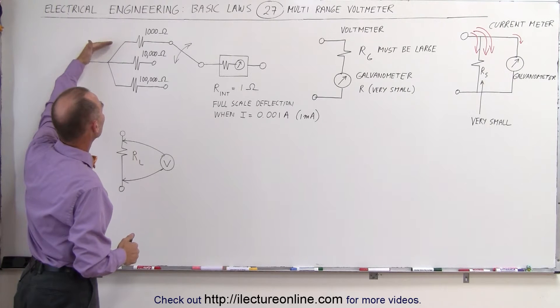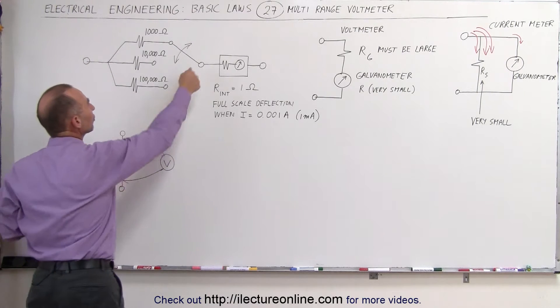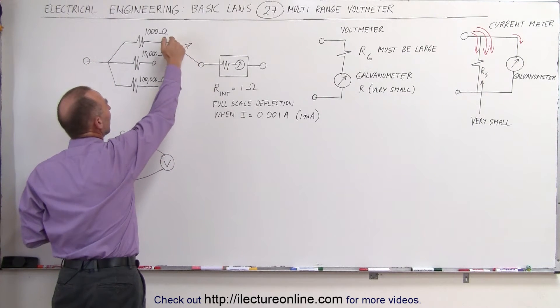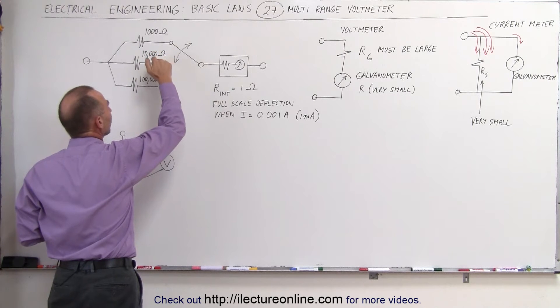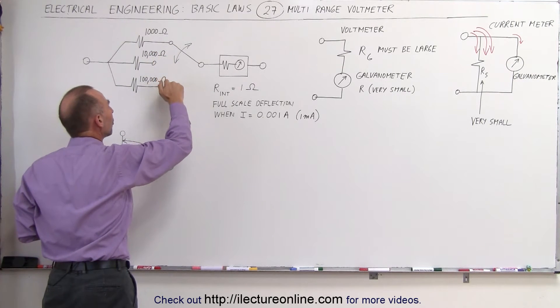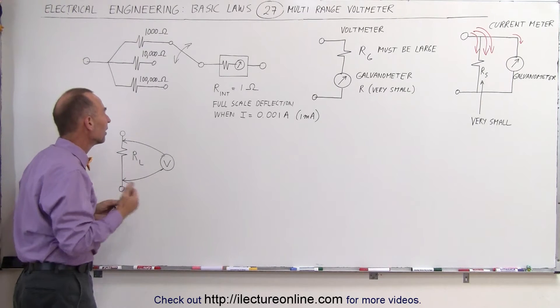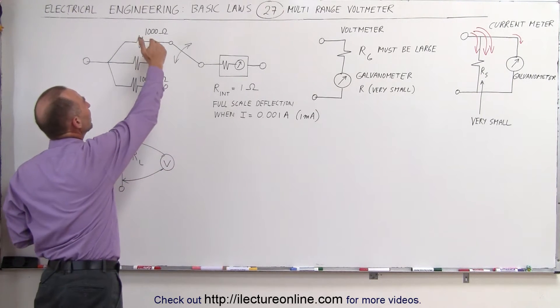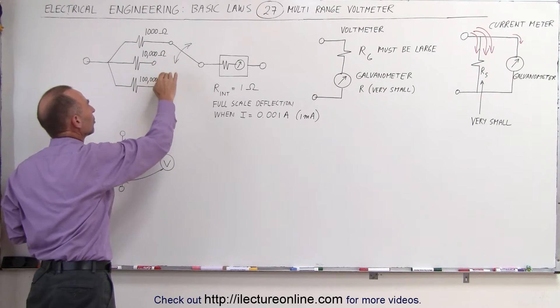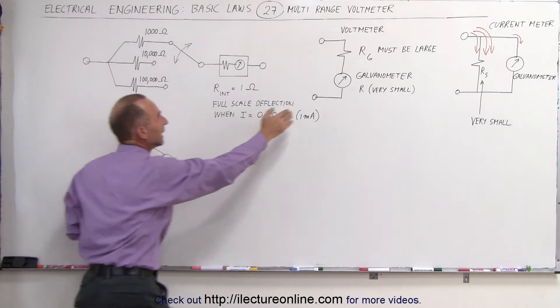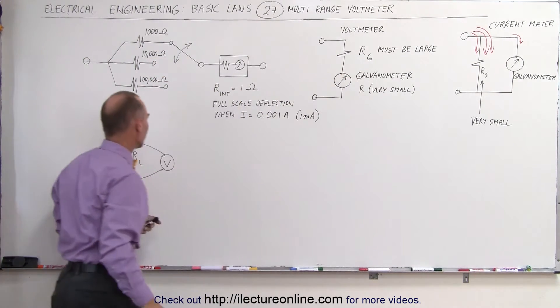Here we have three resistors that we can dial in by turning a knob, the knob will either stop at the 1,000 ohm resistor, the 10,000 ohm resistor, or the 100,000 ohm resistor. So we can dial in three different values. Let's find out what volt reading we can make with a 1,000 ohm resistor, a 10,000 ohm resistor, and a 100,000 ohm resistor in series with the galvanometer.